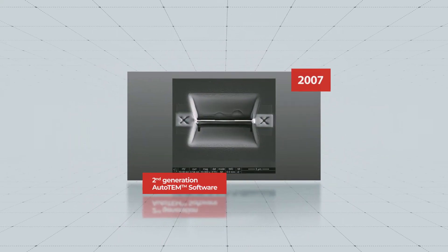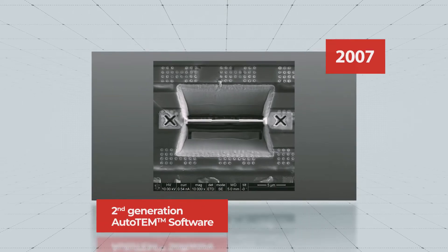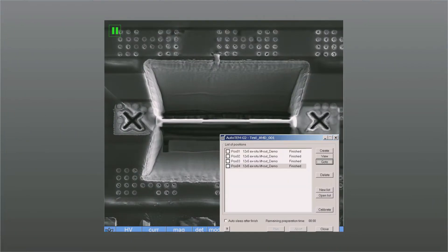In 2007, the second generation of Thermo Fisher's automation software for TEM sample preparation was created supporting ex-situ workflow and sample size customizability. The addition of a graphic user interface significantly improved the ease of use, especially for new operators.